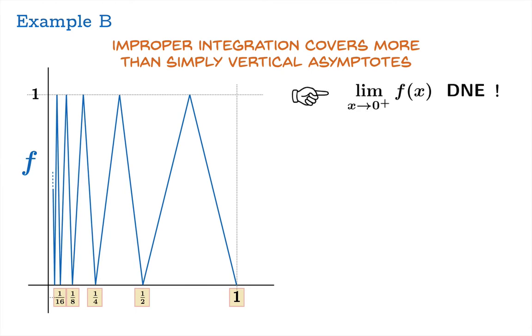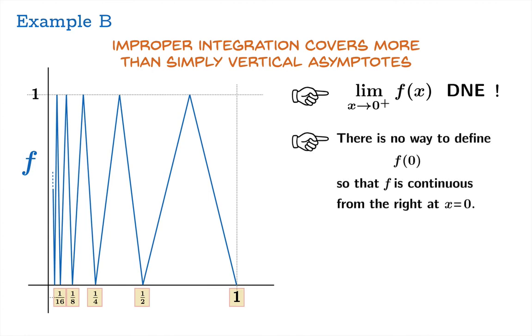And so the limiting value of this function as x approaches 0 from the right does not exist. And a consequence of this is that there's no way to define f of 0 so that f is continuous from the right. The limit doesn't even exist. And therefore this function is continuous only on the interval from 0 to 1 and there's no way to extend it to include the endpoint 0.